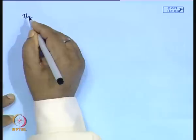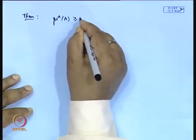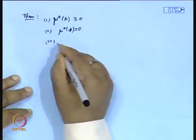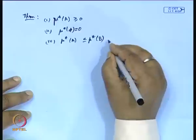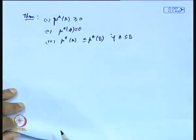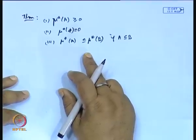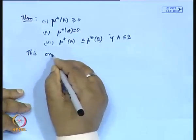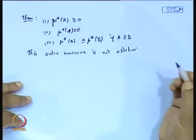The outer measure satisfies the following conditions: mu*(A) is always non-negative; the outer measure of the empty set is 0; and mu*(A) ≤ mu*(B) if A is contained in B. However, this outer measure is not an additive function — in fact, it is only sub-additive. It is not even finitely additive.